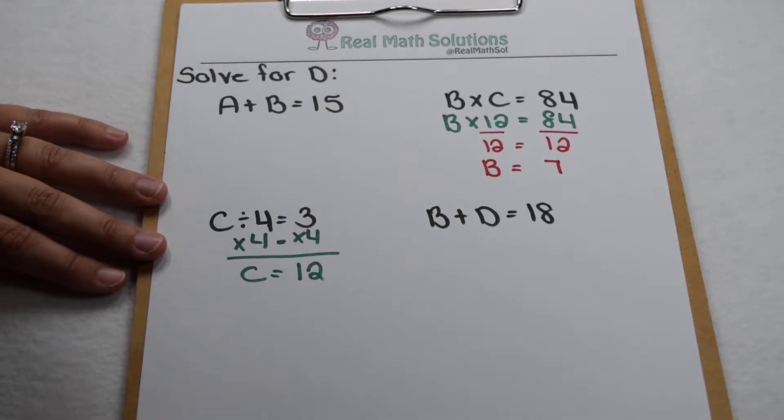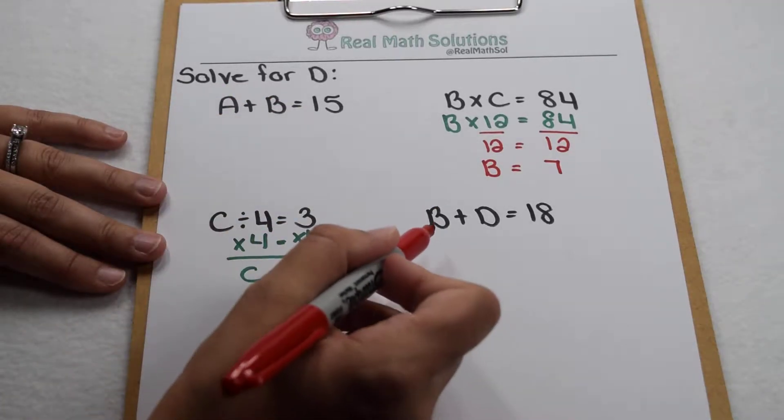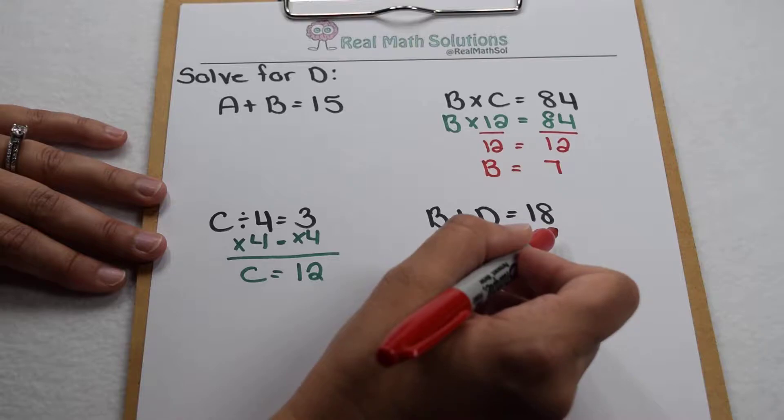Now at this point if I want, I can go over here and figure out that a in the long run is going to be worth 8, but I don't need that piece of information because now I know what b is worth and I need to solve for d.